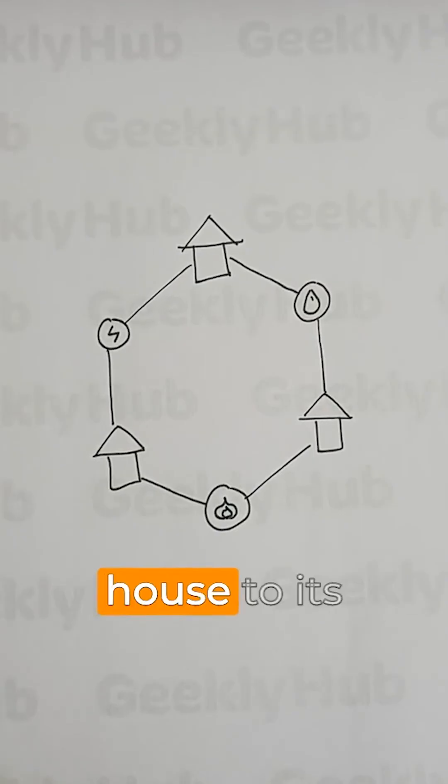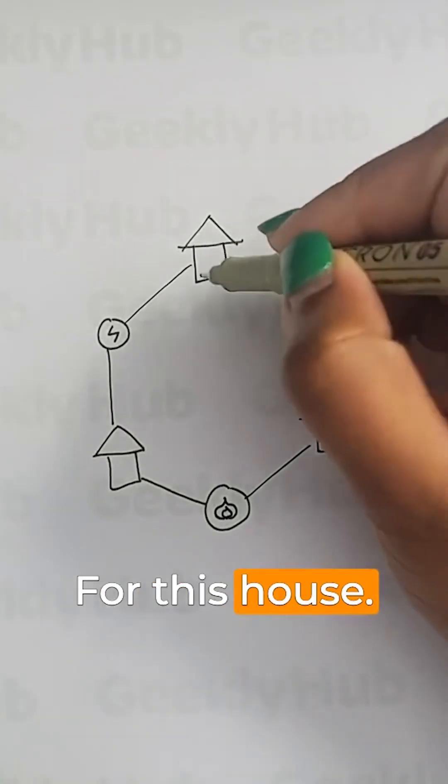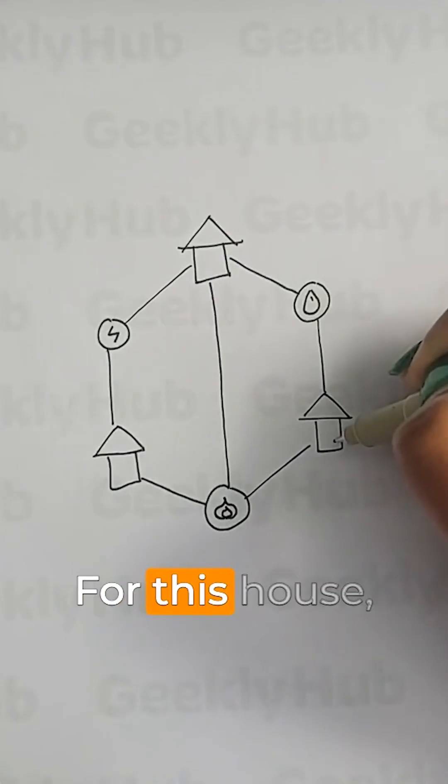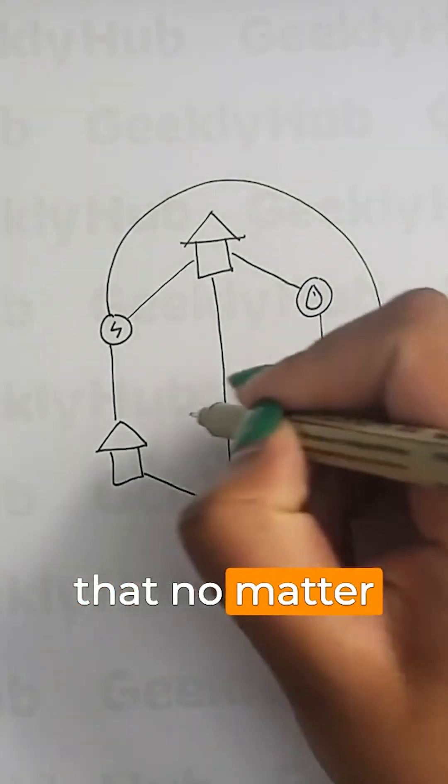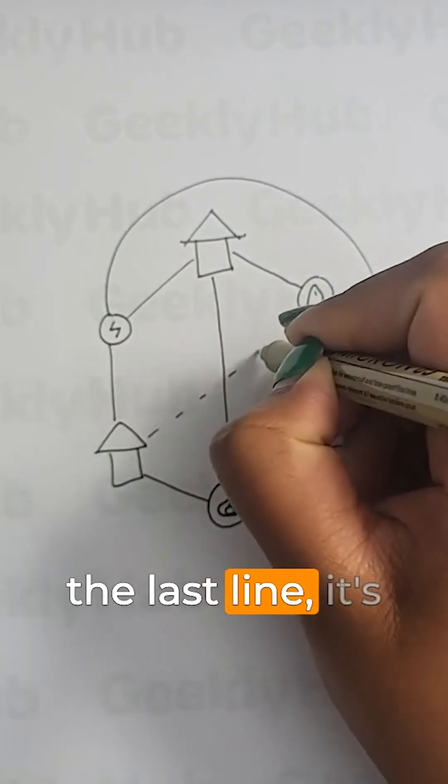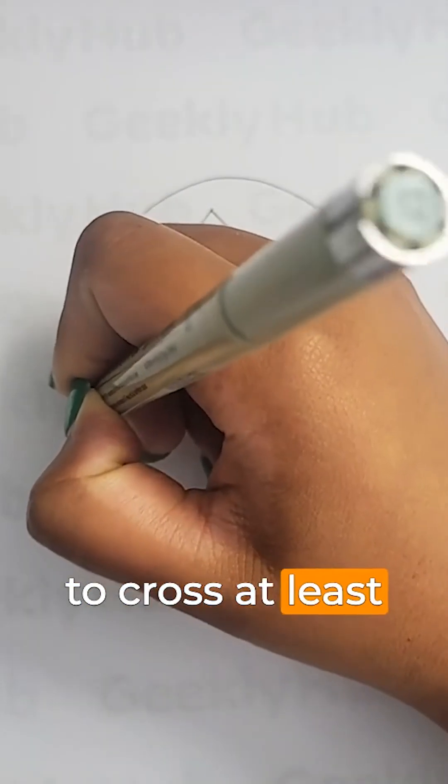Now let's try connecting each house to its missing utility. For this house, we can just go straight across the hexagon. For this house, we have to go around the outside of the hexagon. It's easy to see that no matter how we draw the last line, it's going to have to cross at least one other line.